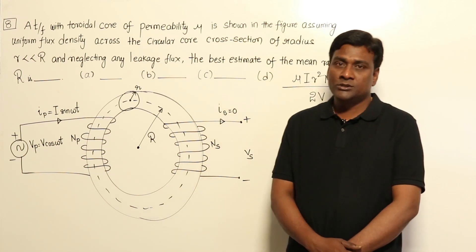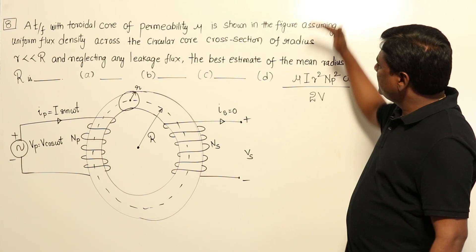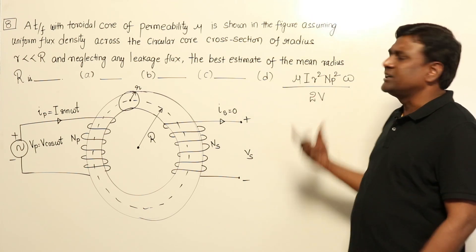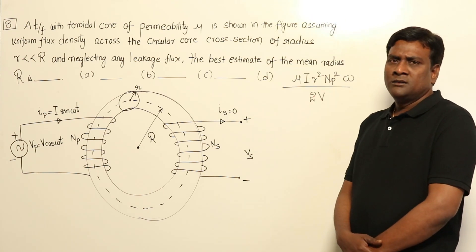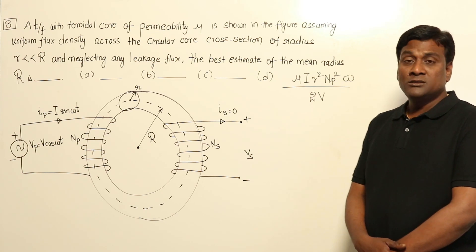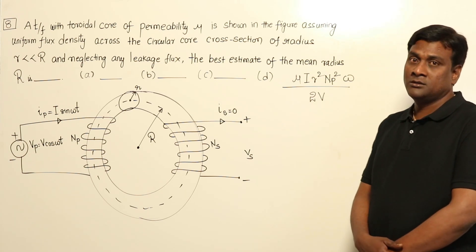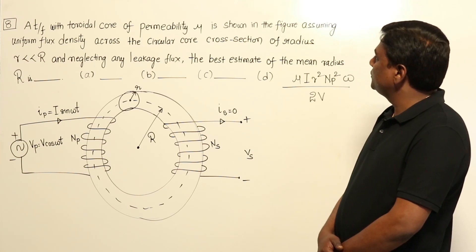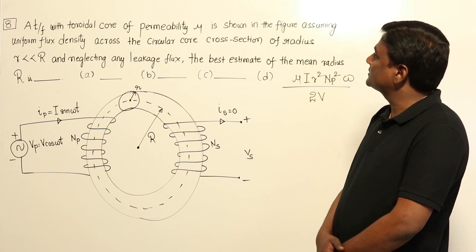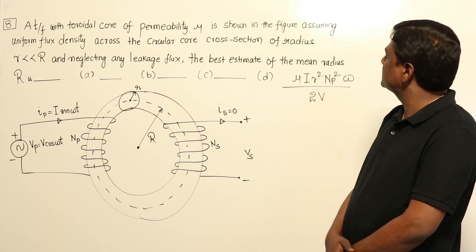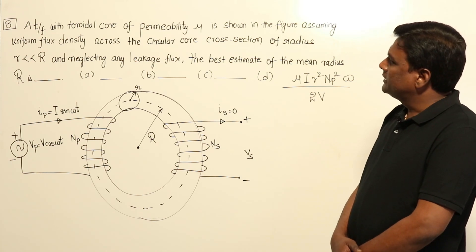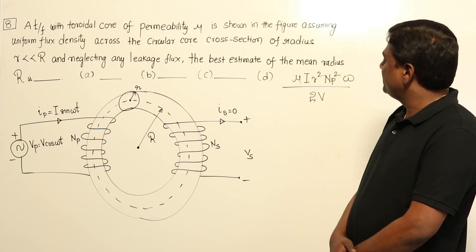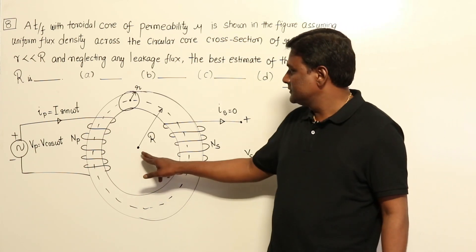Now let's see this whole GATE question. Seemingly it's going to be a very big question with big equations, but we should not remember any formulas and we should get this answer. A transformer with toroidal core of permeability μ is shown in the figure assuming uniform flux density across circular core cross-section of radius r << R and neglecting any leakage flux. The best estimate of the mean radius R_m is...